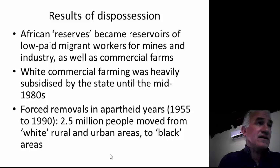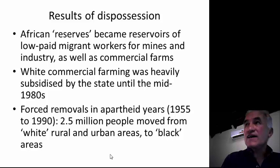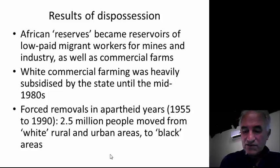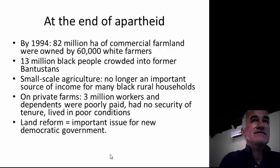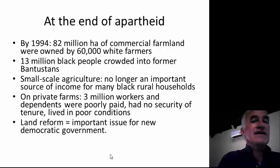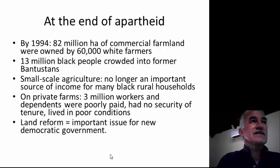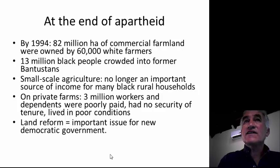Then we go to the apartheid years, with forced removals on a massive scale — at least two and a half million people, probably more — moved from both rural and urban areas defined as white to so-called black areas. So at the end of apartheid in 1994, at the transition to democracy, the situation in the countryside was: 82 million hectares of commercial farmland owned by 60,000 white farmers, with 13 million African people crowded into the former Bantustans. There were also small reserves for coloured people in the Western Cape and Northern Cape, often on former mission stations.